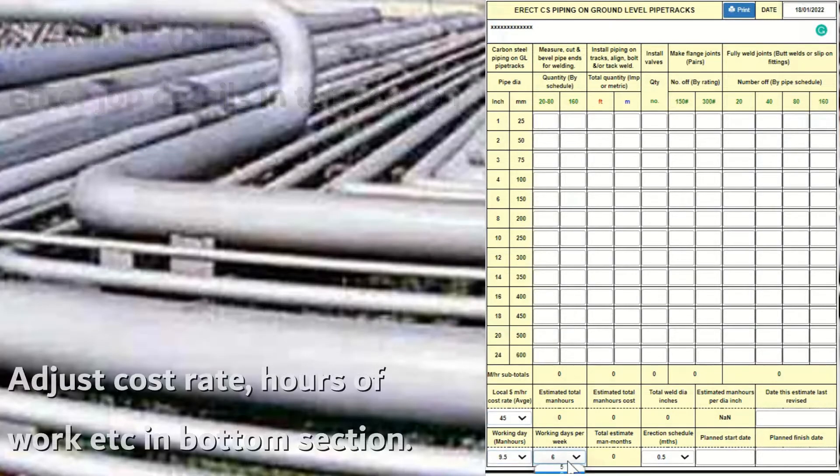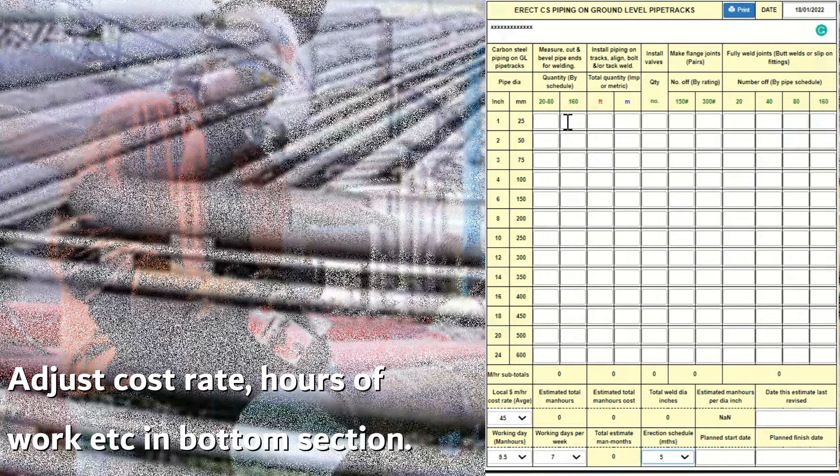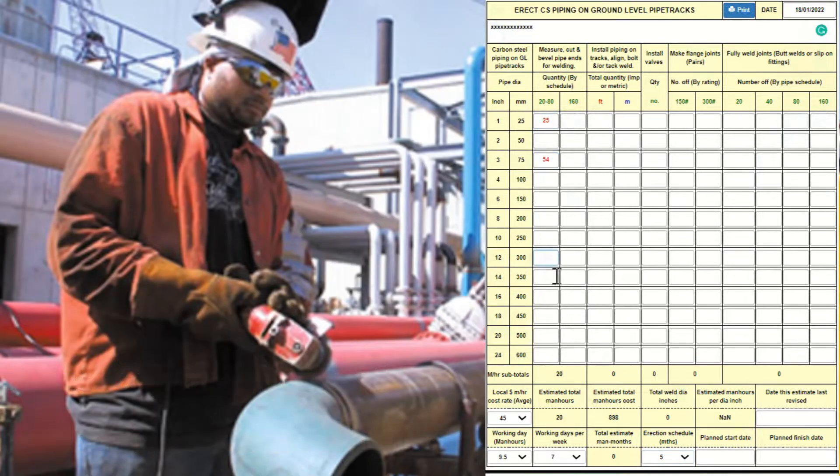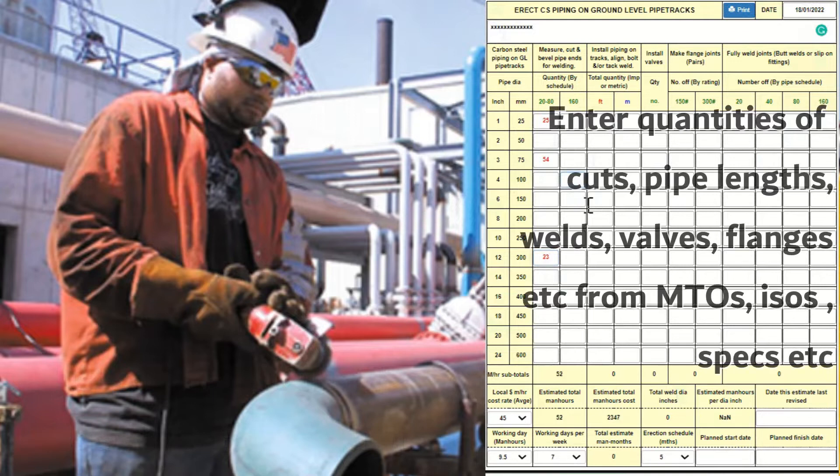Having dated and identified the work scope, we go down to the bottom and make adjustments for the average local man hour cost rate for piping work, the hours per working day, days per week to be worked, and the number of months or part months within which the work must be completed, plus dates if required.